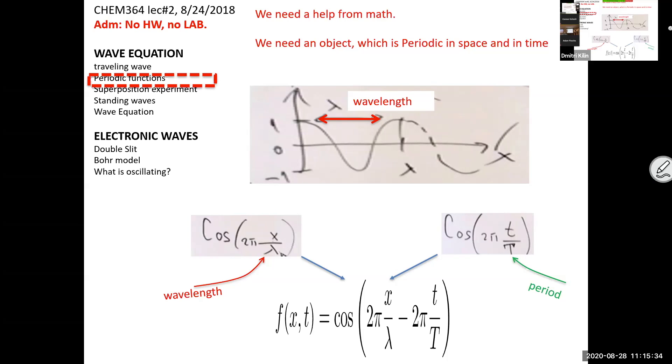Who did allow me to put a minus sign here? What would it change if I change the sign? The wave will start going in different ways. The traveling waves can be forward going and backwards going just depending on the sign between space and time arguments.